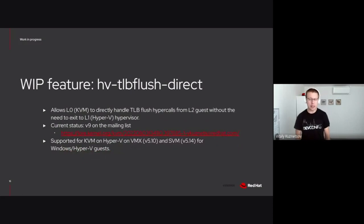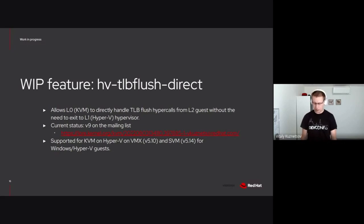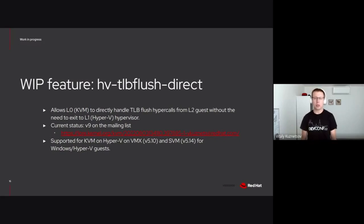The next one is direct TLB flush — how the Hyper-V top-level specification calls it — or level-2 TLB flush as we call it in KVM. The idea is that level-1 and level-0 hypervisors collaborate so that level-1 gives level-0 all the required information to perform TLB flush calls from level-2 guests directly, without the need to exit to level-1. This is much faster, and the series is on the mailing list as part of the bigger TLB flush improvements. You're encouraged to give it a go.